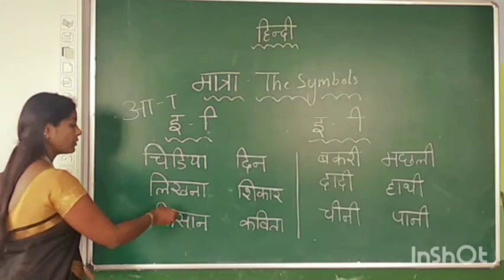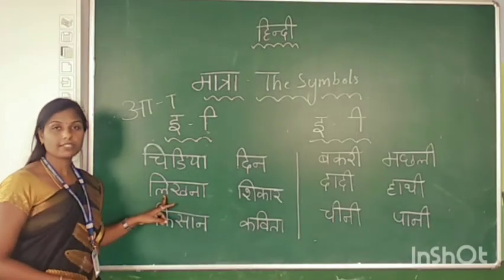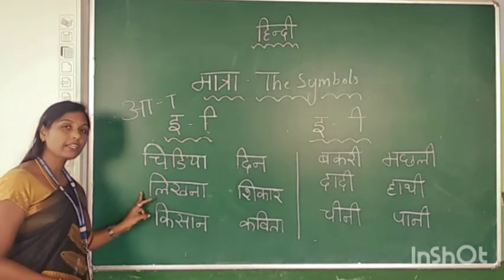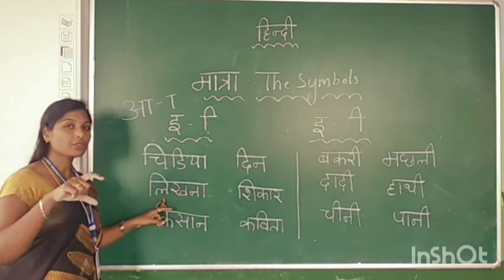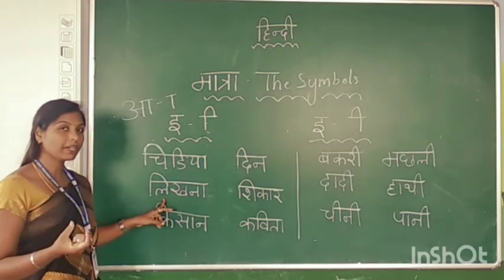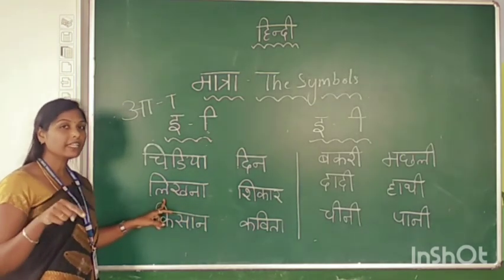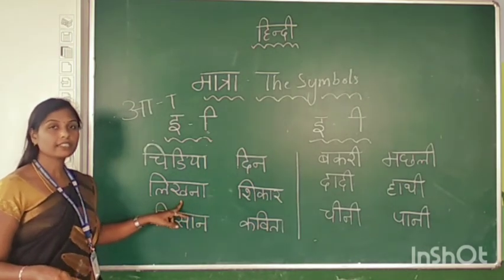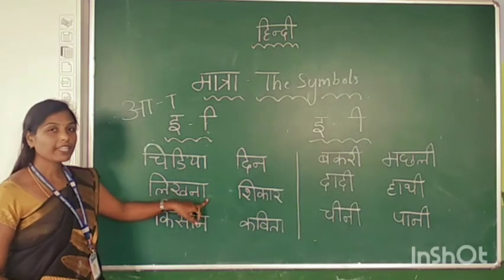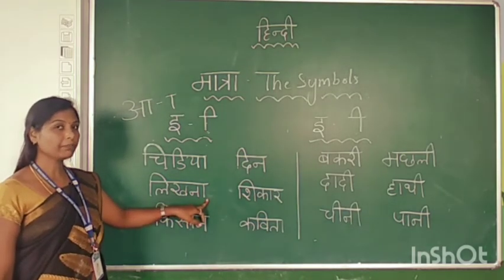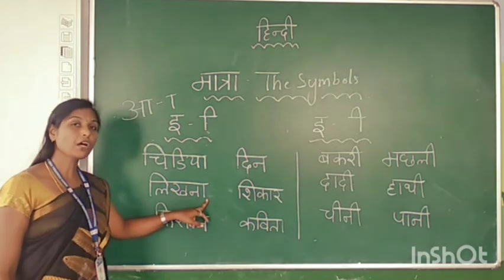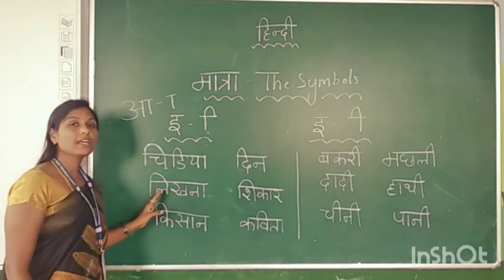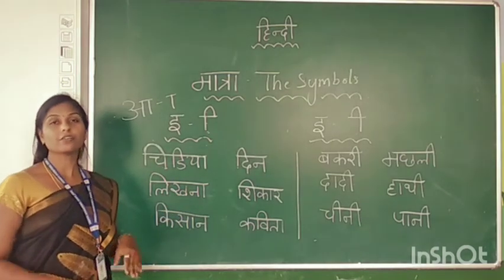Next we'll see the word Likhna. The first letter is La — with the short E symbol joined, La becomes Li. The second letter is Kha — here we check: the symbol of AA is joined with Kha, giving Kha. The third letter is Na. So Li + Kha + Na = Likhna.